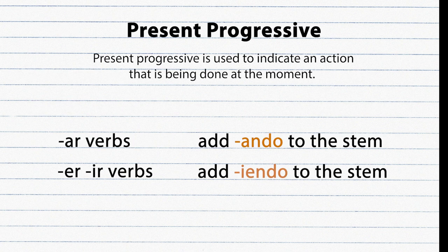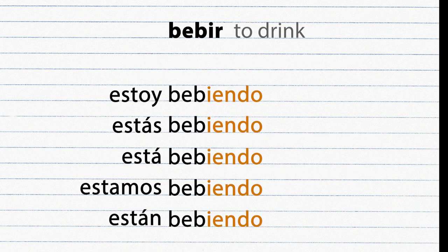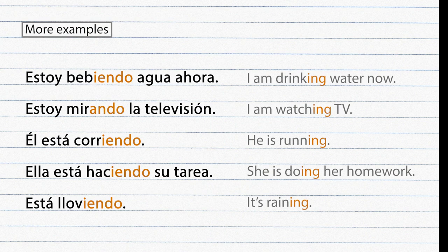Present progressive is used to indicate an action being done at this moment — very similar to the -ING form in English. It is formed with a conjugated ESTAR verb plus the gerund. Examples: Estoy bebiendo agua ahora, Estoy mirando la televisión, Él está corriendo, Ella está haciendo su tarea, Está lloviendo.